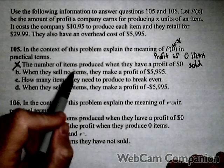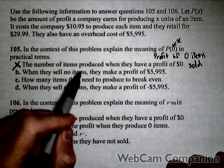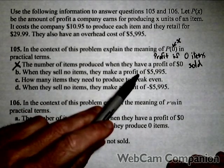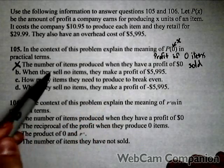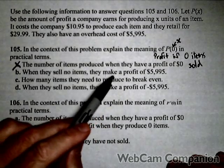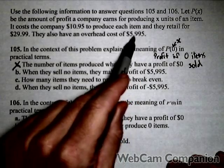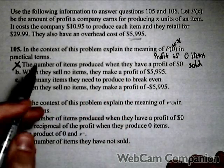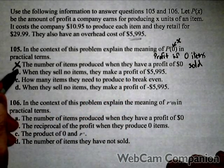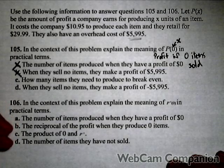When they sell no items, they make a profit of $5,995. Well, if they sell no items, they're probably not going to make a profit. In fact, they had an overhead cost of $5,995. They should actually lose money if they sell no items. So it's not going to be B.